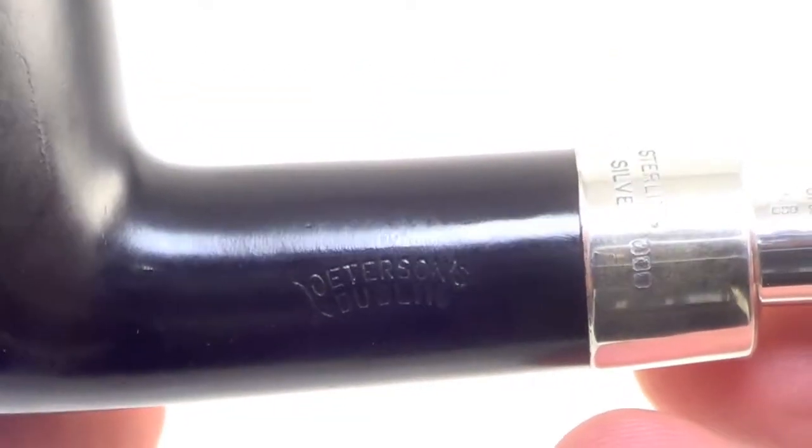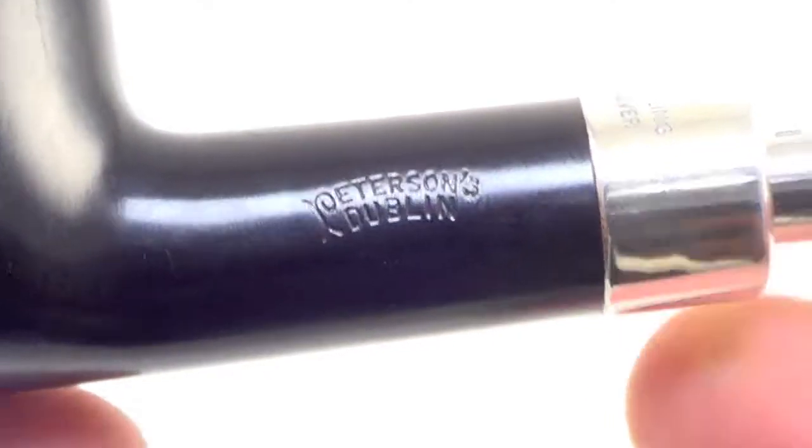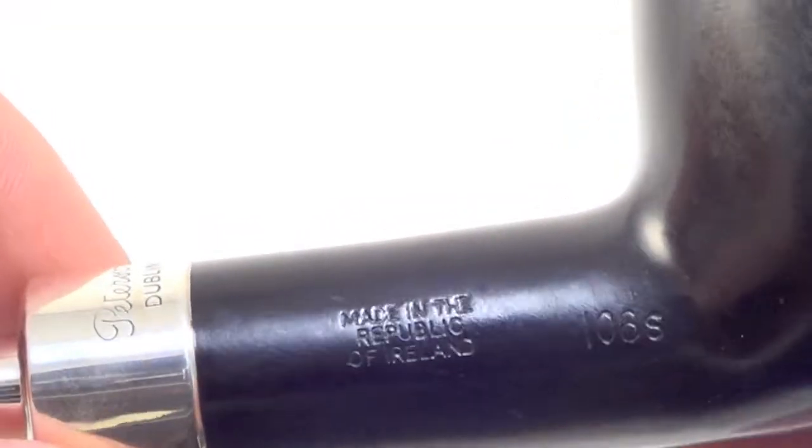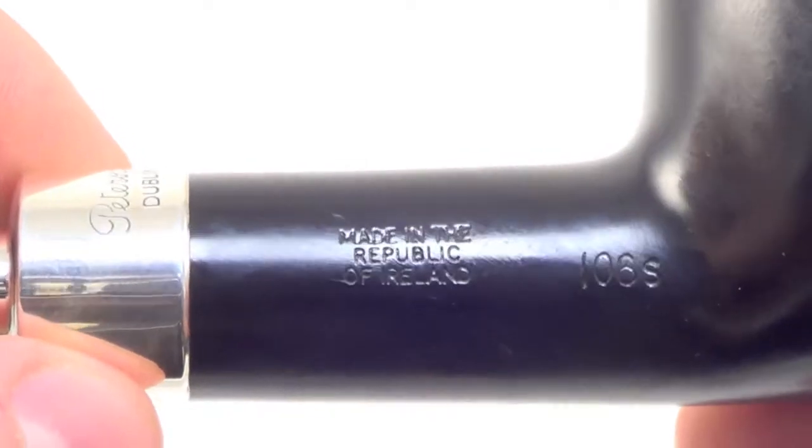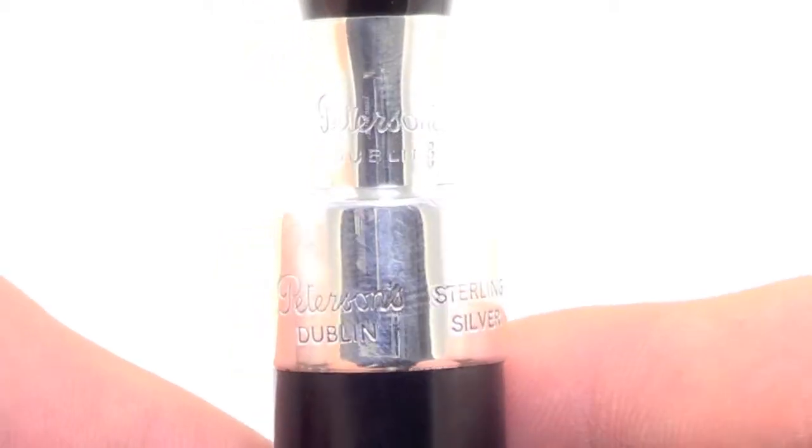It's marked Peterson's Dublin, made in Republic of Ireland, 106 S. Peterson's Dublin is also marked all over the silver spigot.